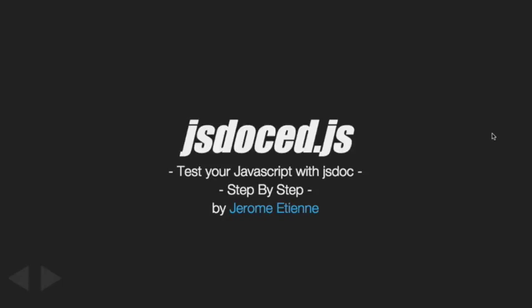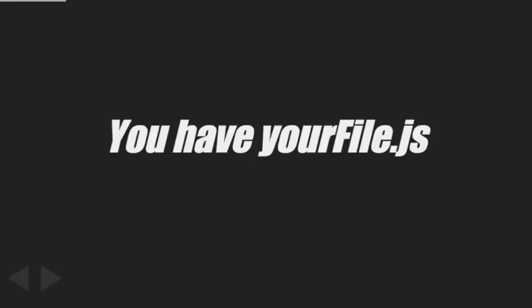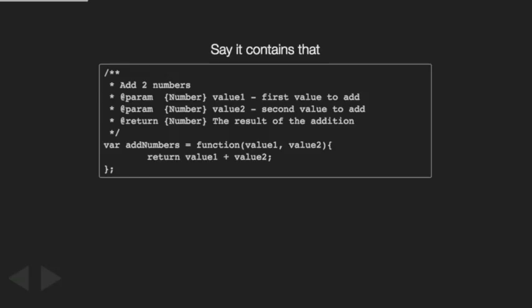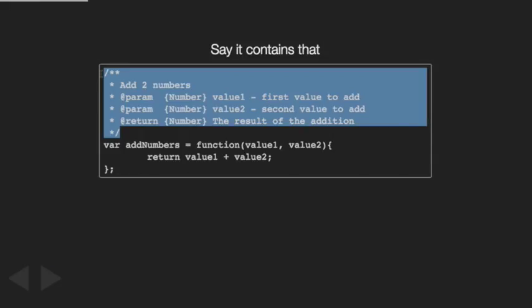We're going to follow the process step by step. Step one: you have a file in JavaScript. This is a small file - it adds two numbers, value one and value two, returns the sum, and has a JSDoc comment.